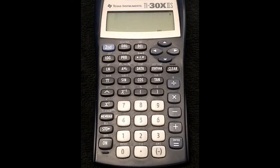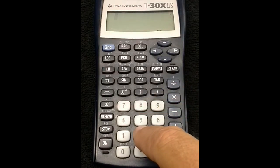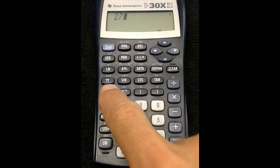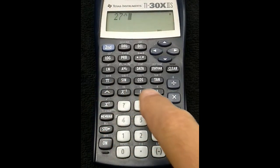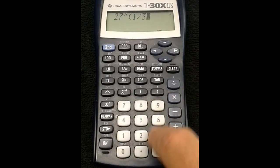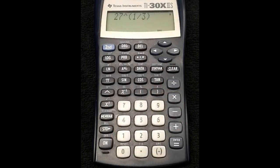You can take the third root of a number on the calculator by typing the number, 27, hitting the caret button, then putting 1 third in parentheses, and enter. The answer is 3.